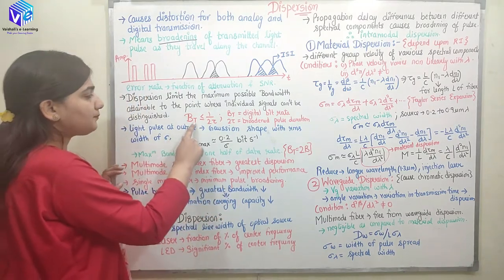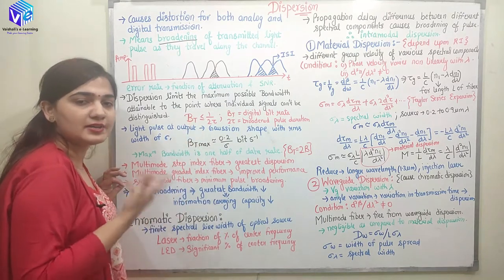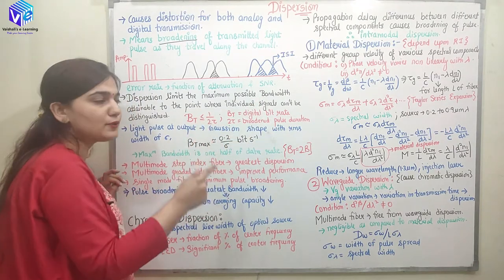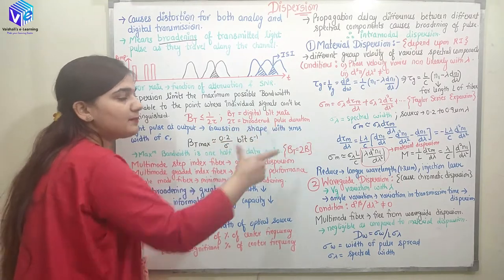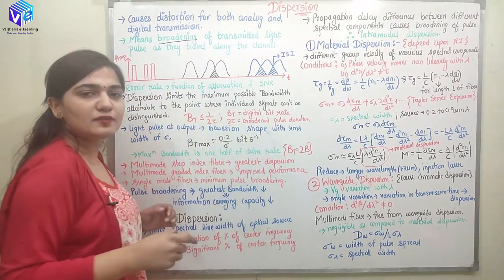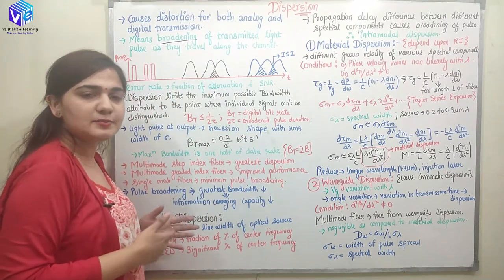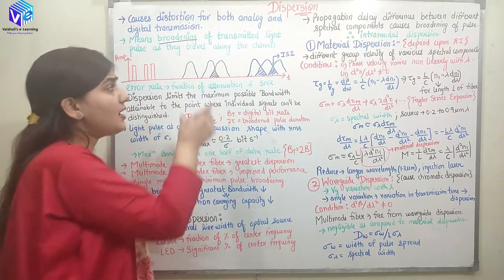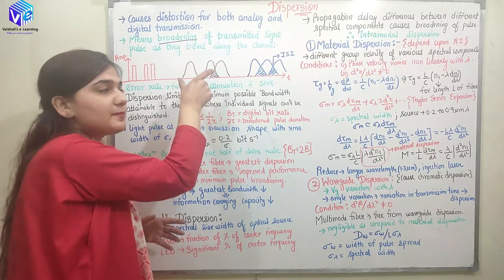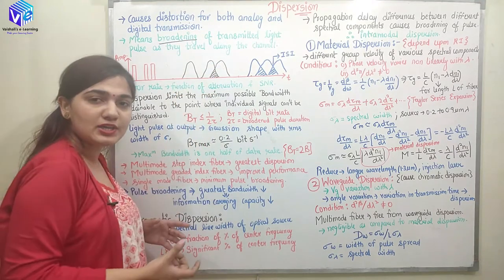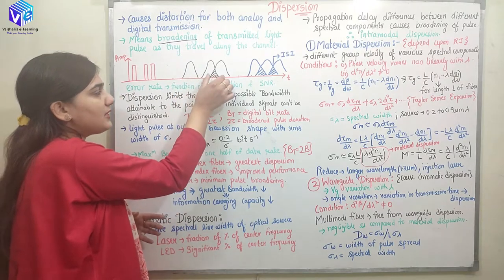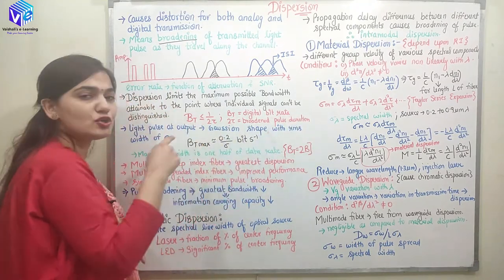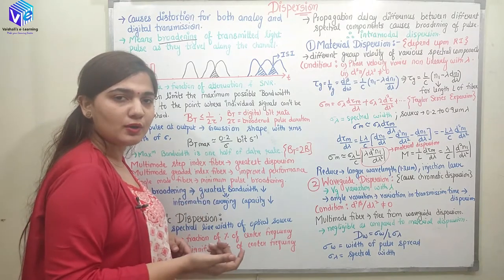BT is the rate of transmission of the signal, called the digital bit rate. It is less than or equal to 1 upon 2τ, where 2τ represents the broadened pulse duration. During the transmission of the signal, this signal has broadened out. We have to calculate what is the bit rate associated with this broadened pulse — the broadened pulse duration. BT should always be less than 1 upon 2τ.